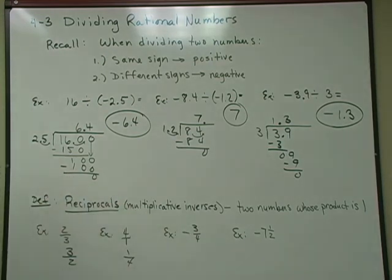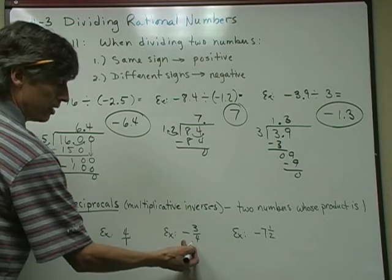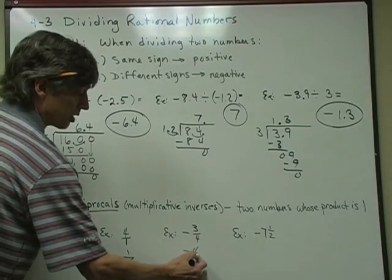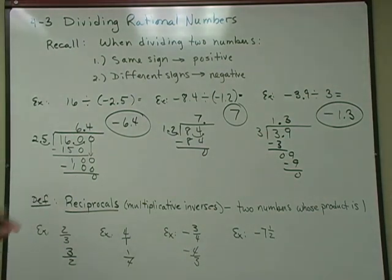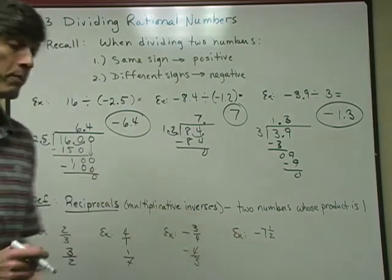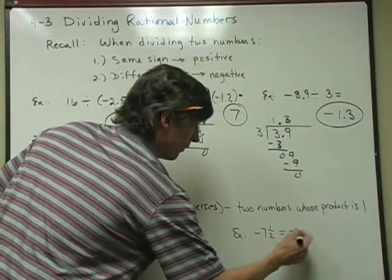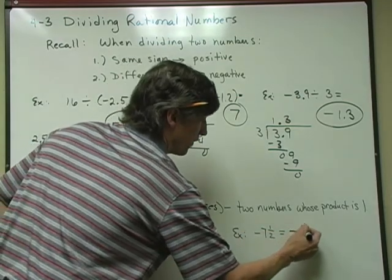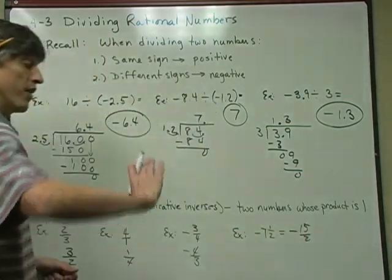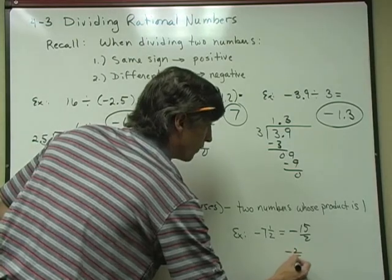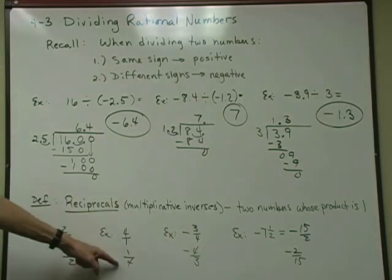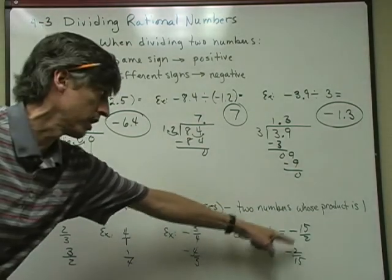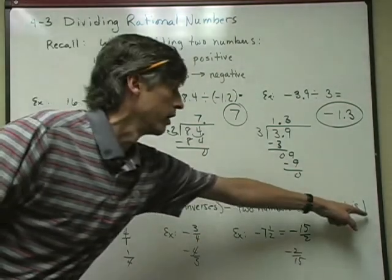The reciprocal of a negative is a negative, so if you flip negative 3 fourths around, you get negative 4 thirds. For a mixed number — students have had fits with mixed numbers — change it to an improper fraction first. This is negative: 2 times 7 is 14, plus 1 is 15, so it becomes negative 15 over 2. Invert it and you get negative 2 fifteenths. That's the reciprocal. These are not the same numbers, but they are reciprocals — multiply them together and you get a product of 1.